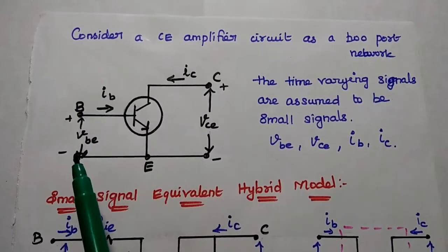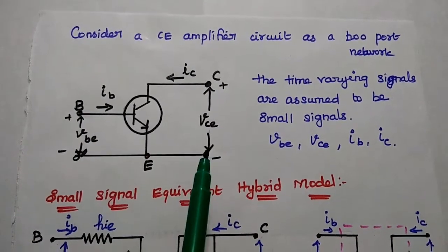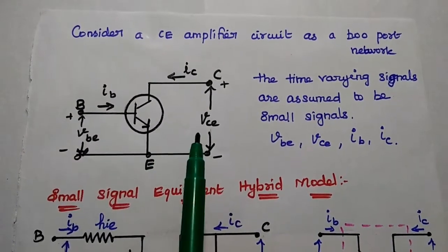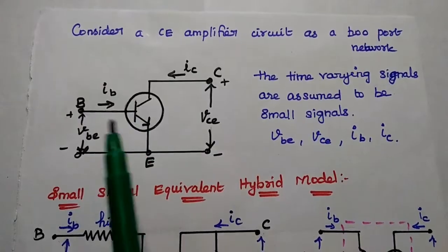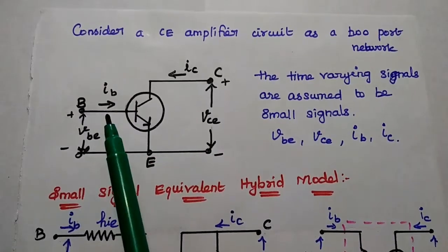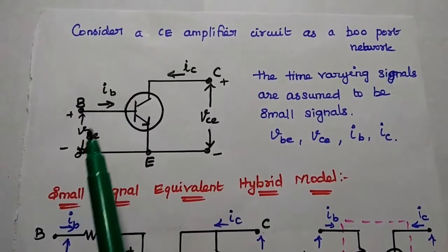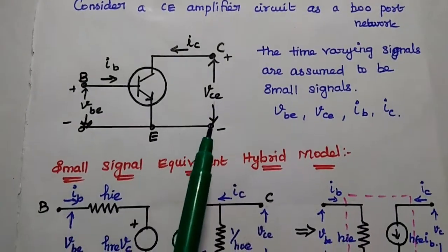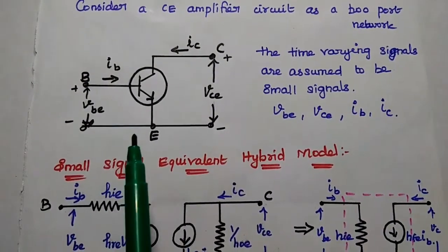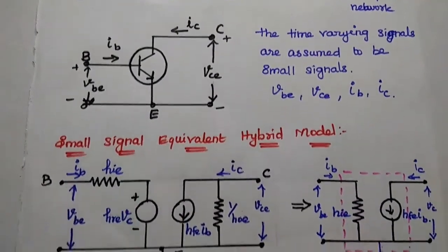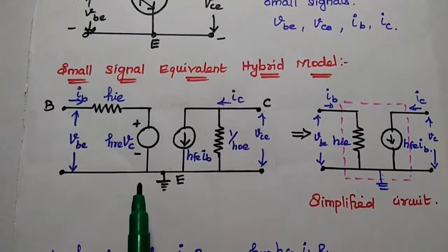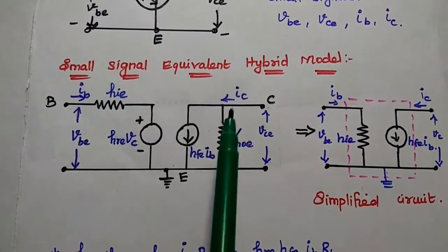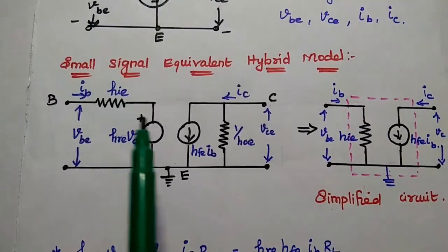We can consider the CE amplifier circuit as a two-port network. Two-port means one is the input port and the other is the output port. The time-varying signals are assumed to be small signals. Here, the input parameters are I_B and V_BE, and the output parameters are I_C and V_CE. For this transistor, the equivalent hybrid model is given here, and the transistor is represented with four parameters.